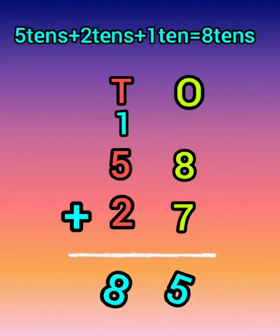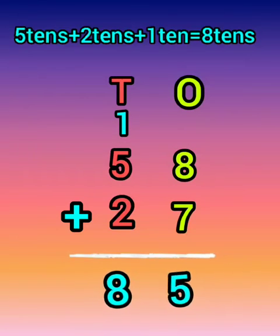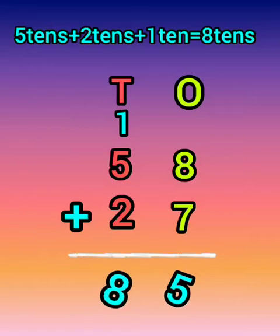Step 2: Now add the tens. 5 tens plus 2 tens equal to 7 tens. Don't forget to add the 1 ten at the top. Now 7 tens plus 1 ten is equal to 8 tens. Write 8 in the tens column.